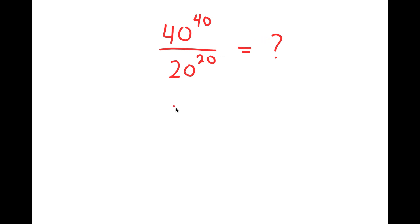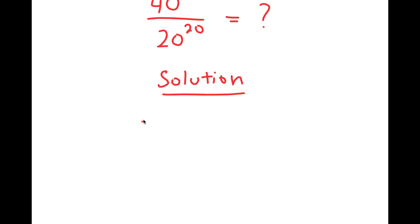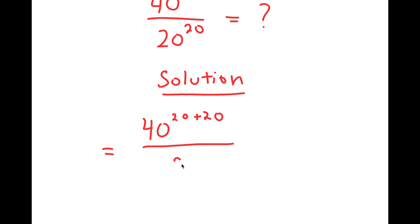So for my solution, what I'm first going to do is rewrite 40 to the power of 40 as 40 to the power of 20 plus 20. So now I have 40 to the power of 20 plus 20 over 20 to the power of 20.